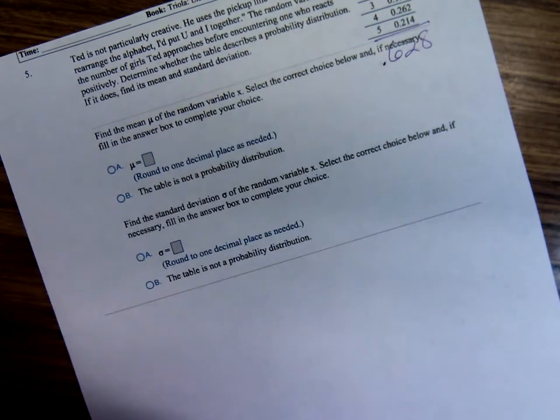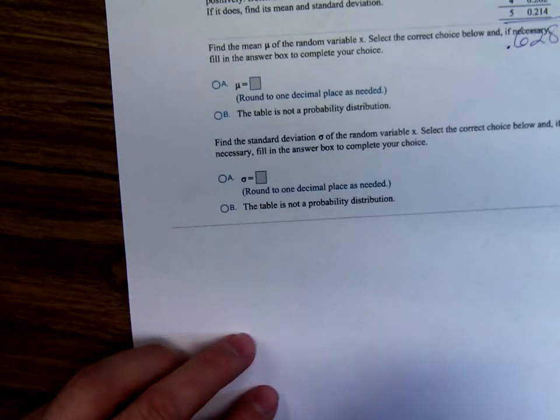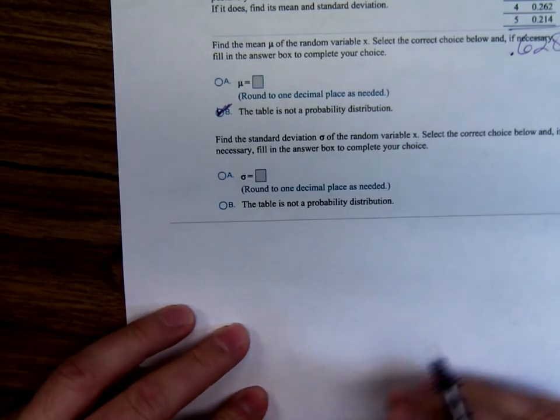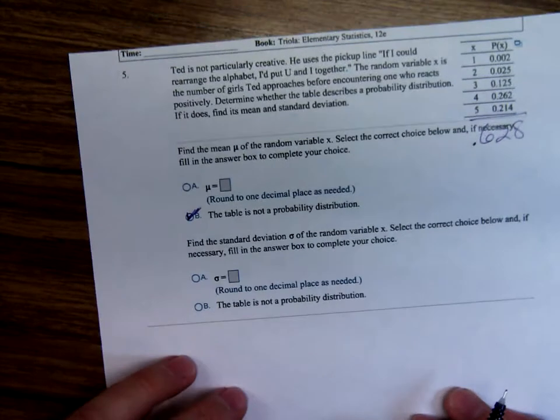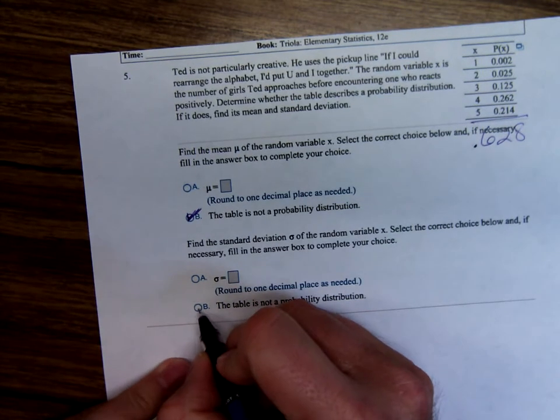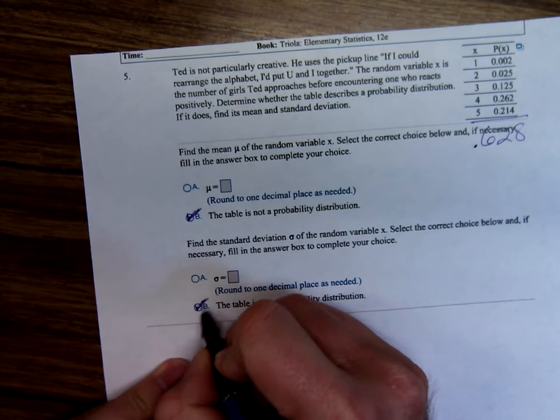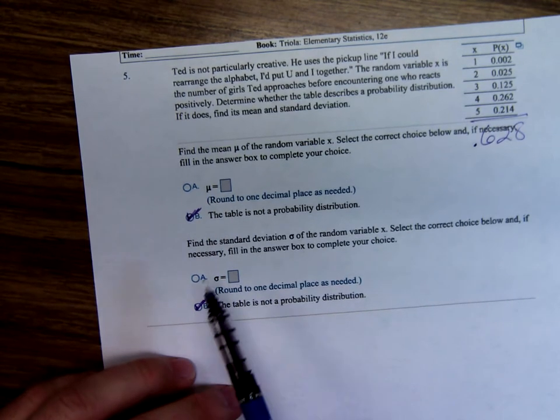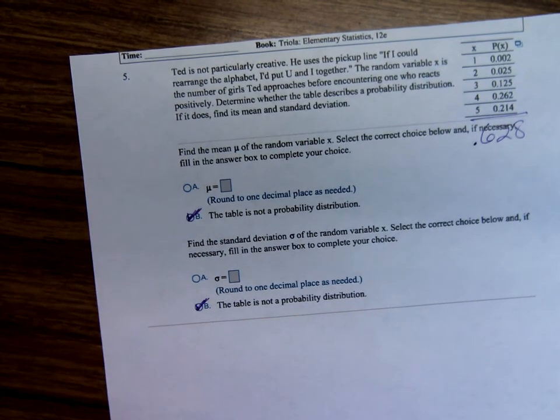Which means this table is not a probability distribution. So we'll say B, table's not a probability distribution. And we can't calculate the mean or the standard deviation because it's not a probability distribution.